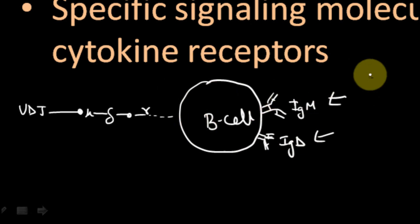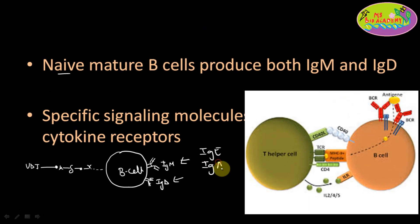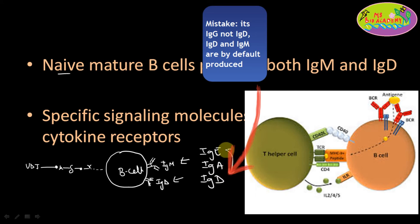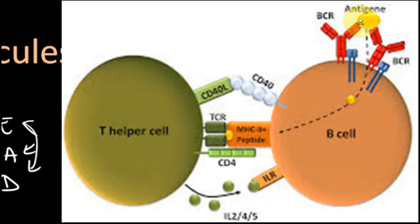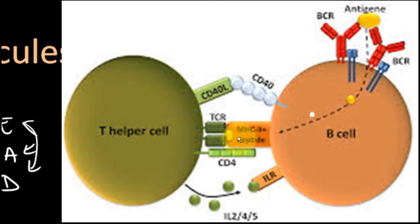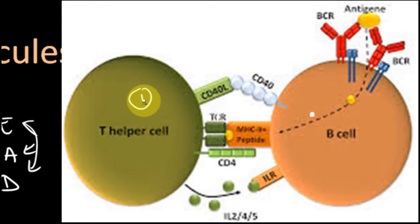Other different specific antibodies like IgE, IgA, and IgG depend on what signals the B cell receives when it interacts with the antigen. When the antigen comes, the mature B cell has B cell receptors that recognize the antigen, internalize it, and antigen processing happens — the antigen breaks down into peptides and these peptides are then presented with MHC molecules on the surface. This is antigen presentation.